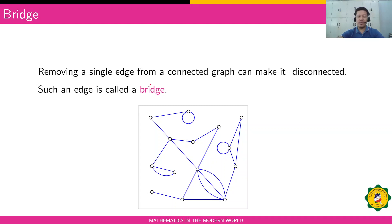A bridge is an edge such that when you remove it, some parts of the graph become disconnected. So removing a single edge from a connected graph can make it disconnected — such an edge is called a bridge. For example, in this graph, let's identify which edges are bridges.